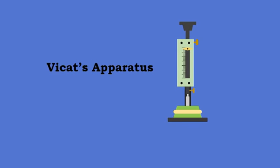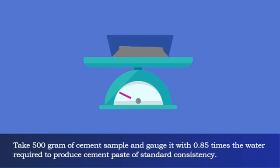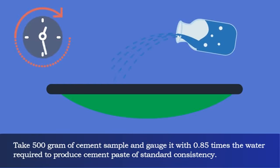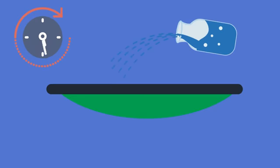The VCAT apparatus used in the consistency test is also used for the setting time test. Take 500 grams of cement sample and gauge it with 0.85 times the water required to produce cement paste of standard consistency. Start the stopwatch when water is added to the cement. The paste is prepared in the standard manner and filled into the VCAT mold within 3 to 5 minutes.